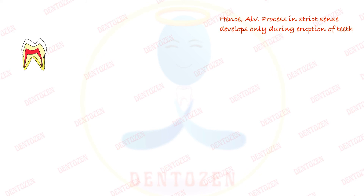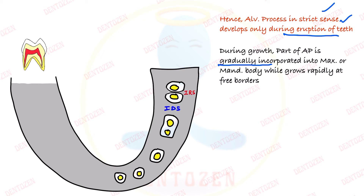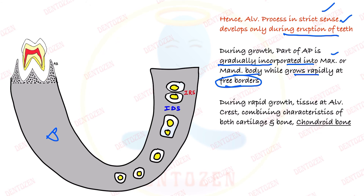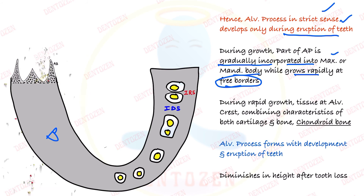The alveolar process grows in two ways: one part gradually gets incorporated into the body of maxilla and mandible, and another part grows rapidly at its free borders — the alveolar crest. The tissue at the alveolar crest shows characteristics of both cartilage and bone, and is called chondroid bone. Since alveolar process forms with the development and eruption of teeth, if teeth are lost, the alveolar process will diminish — there will be a reduction in its height.